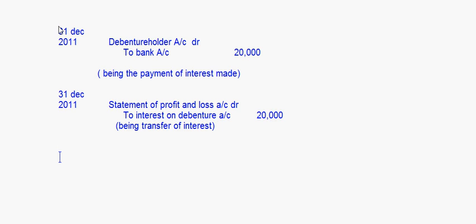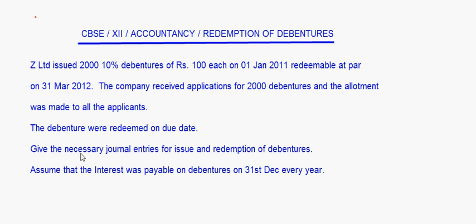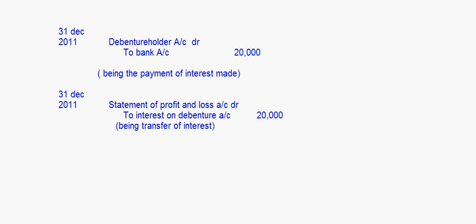Now we move to the next year. The debentures have to be redeemed on 31st March 2012. Before the debentures are redeemed, interest must be paid up to the date of redemption. We have already paid interest up to December 2011. For the year 2012 — January, February, March — these 3 months' interest has to be paid to the debenture holders.